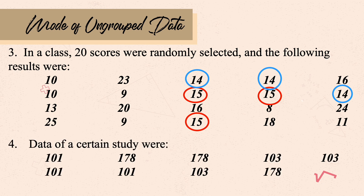Last example: data from a certain study. Looking at the data, we have three 100-point values, three 178s, and three 103s. Adding the frequencies of these three groups equals the total sample size, which is 9. In this case, we say that the data set has no mode, since they all appear equally and their combined frequencies equal the total sample size.